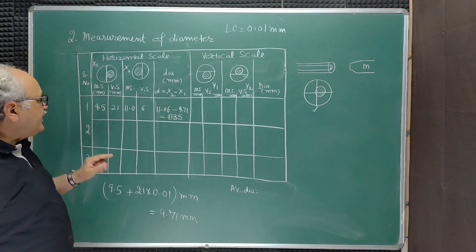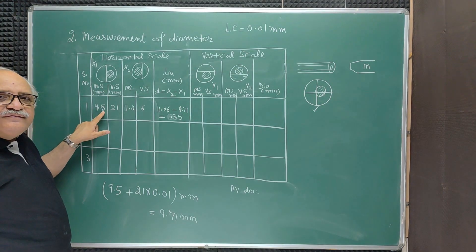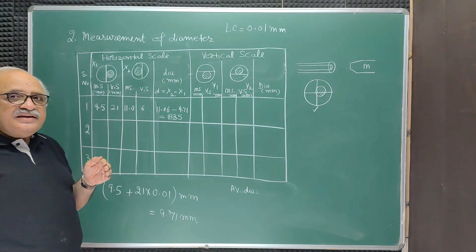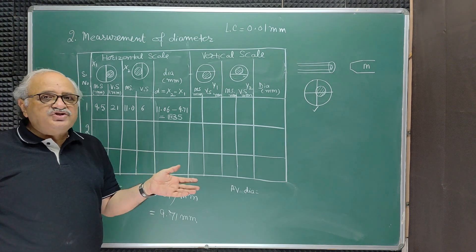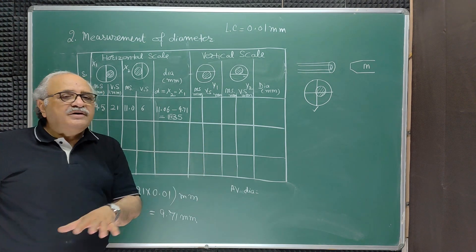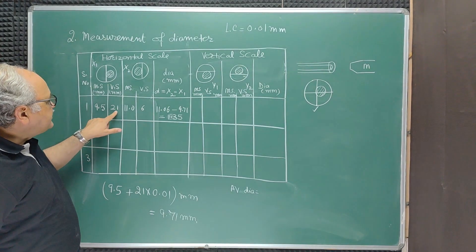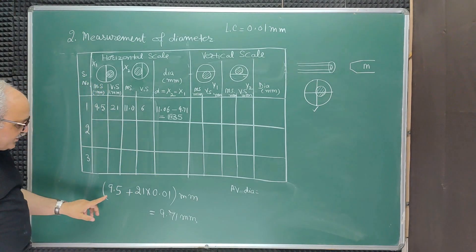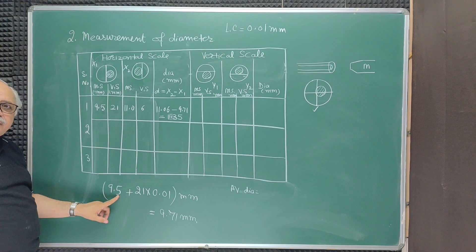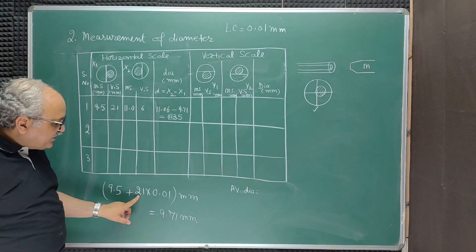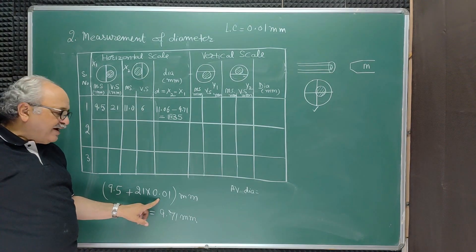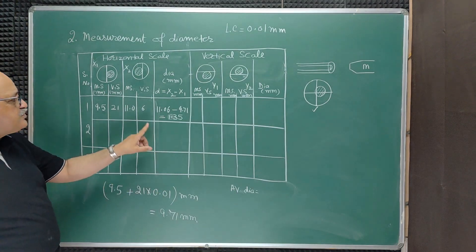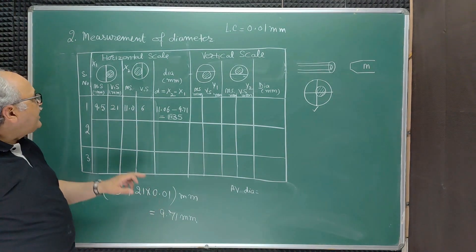In our case we found that the zero of the vernier scale rests between 9.5 and 10, so we record the lesser value 9.5. Then we check which vernier scale division is coinciding with any main scale division — in our case it is the 21st division. So this position is 9.5 + (21 × 0.01) = 9.71 mm. This is the first observation, which we call x1.